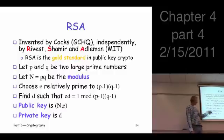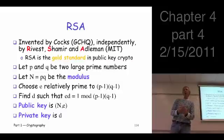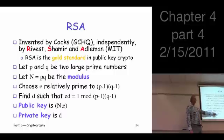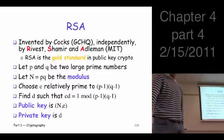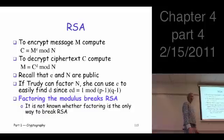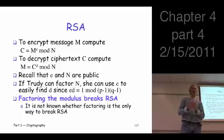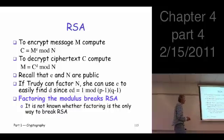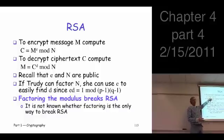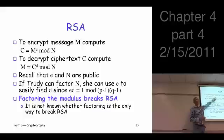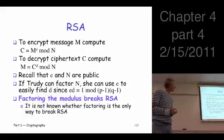Once we have those numbers, the public key is n and e — the modulus and the encryption exponent — and the private key is d, the decryption exponent. To encrypt a message m, you use the public key: compute c = m^e mod n, and that's the ciphertext. Since e and n are public, anyone can encrypt.